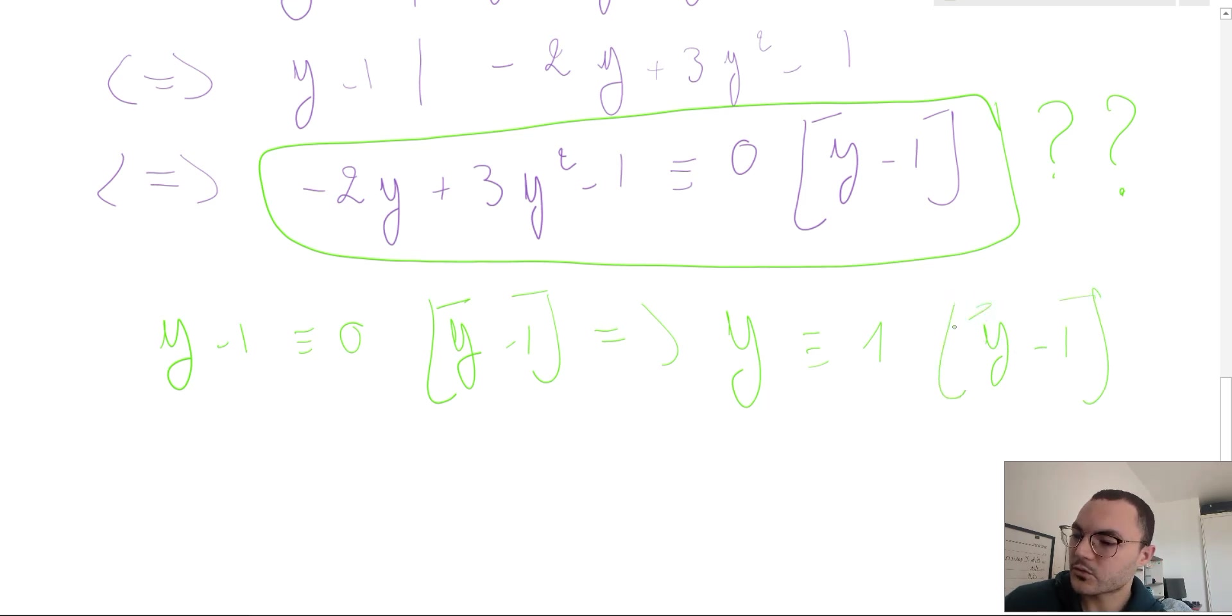So let's replace y by one in this expression. It yields that -2 + 3 - 1, which is equal to zero, is congruent to zero mod y minus one.